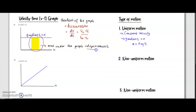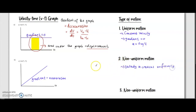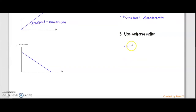The second graph shows a constant gradient, so at each point you're going to have the same value of gradient, meaning the same value of acceleration, but the velocity is increasing uniformly. The last graph refers to velocity decreasing uniformly, with constant deceleration.